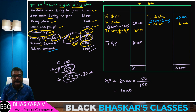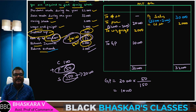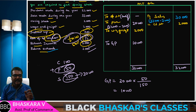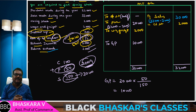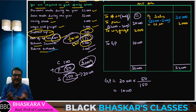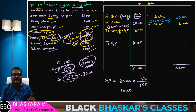The balancing figure is 33.33%. This is the balancing figure. This question appeared in the 2009 question paper, and most of the students should be familiar with this type of problem.